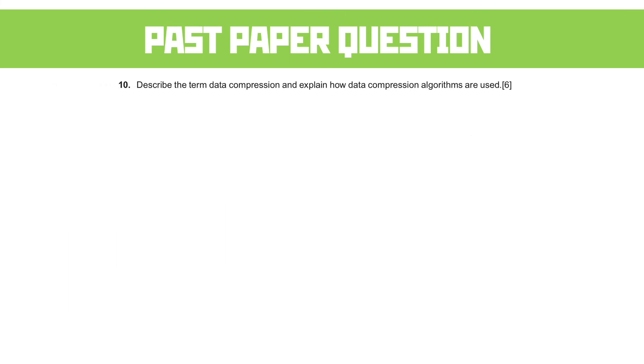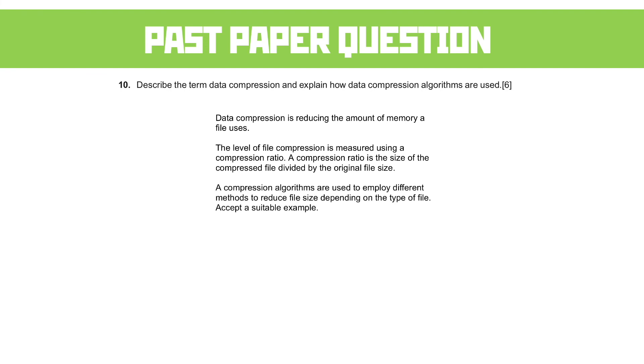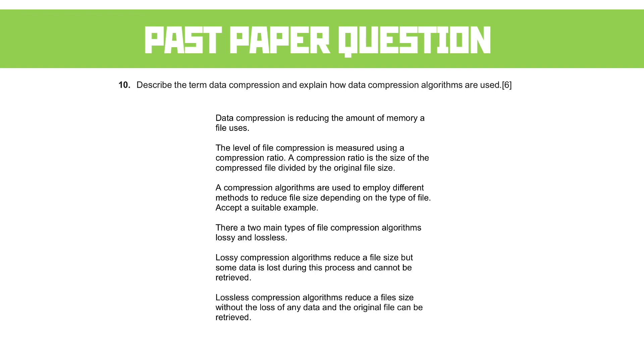Part 10. Describe the term data compression and explain how data compression algorithms are used. Data compression is reducing the amount of memory that a file uses. The level of file compression is measured using the compression ratio, which is the size of the compressed file divided by the original file size. Compression algorithms employ different methods to reduce file sizes depending on the type of file. There are two main types of compression algorithm: lossy and lossless. Lossy reduces the file by removing some data, and lossless means we can get back to the original file.